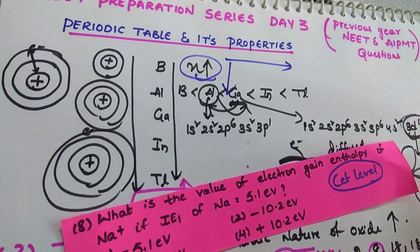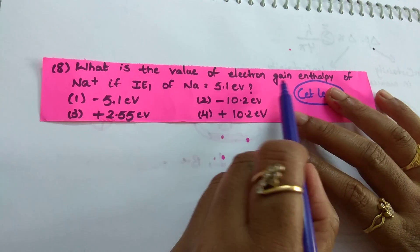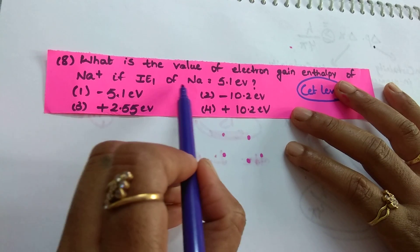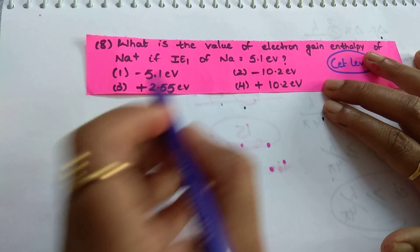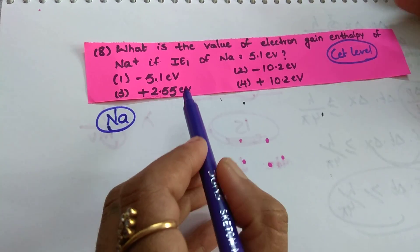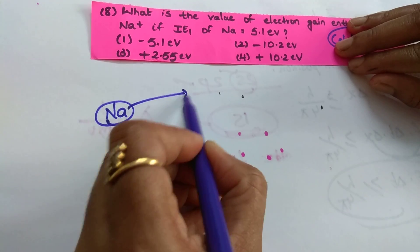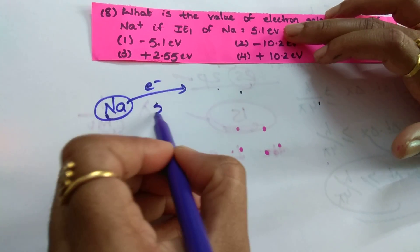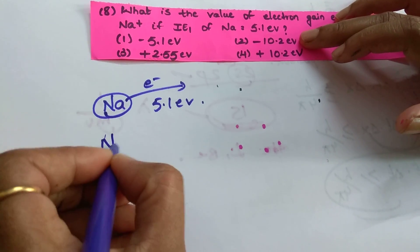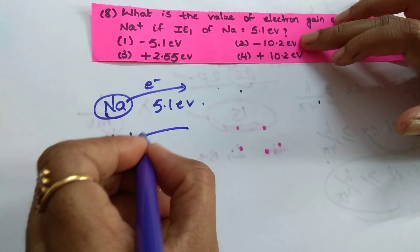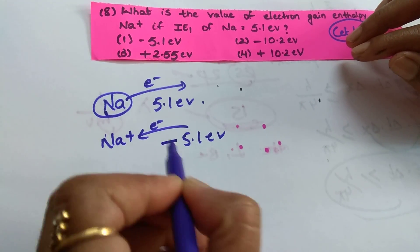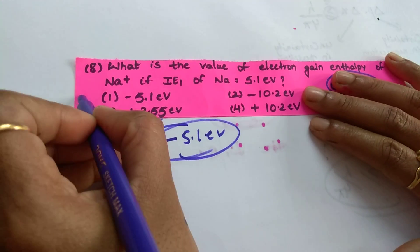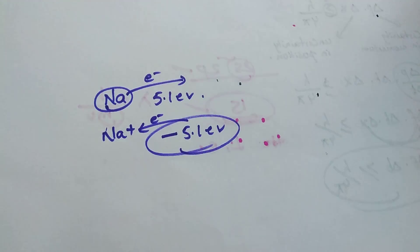Next question: what is the value of electron gain enthalpy of Na+, if IE1 of Na is equal to 5.1 eV? Na is sodium. IE1 is the amount of energy required to remove an electron — how much energy is required? 5.1 electron volt. So what is the amount of energy released when you add an electron to Na+? The same amount of energy will be released. Energy released means you put a minus sign. That is it — this is the easiest question. The answer is minus 5.1 electron volt.